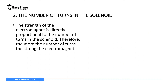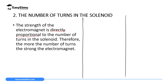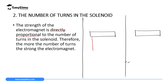The second factor that affects the strength of an electromagnet is the number of turns of the solenoid. The strength of the electromagnet is directly proportional to the number of turns of the solenoid. This means the more the number of turns, the stronger the electromagnet. We can draw a setup with one having more number of turns and the other with few number of turns. You should keep the thickness of the soft iron material constant, and the number of cells or the amount of current constant. The only thing you are going to vary is the number of turns of the solenoid.